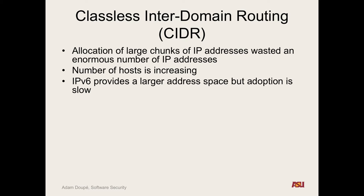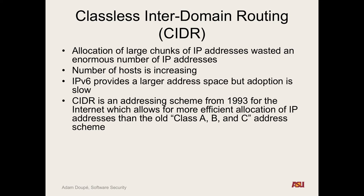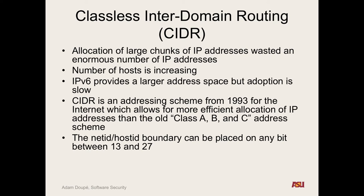IPv6 has 128-bit addresses — enough to address every particle of sand on a beach. The problem is adoption is slow; Google reports about 9-10% IPv6 traffic. In 1993 they came up with CIDR — Classless Inter-Domain Routing — which allows you to change the net ID and host ID boundary to any bit between 13 and 27, so you can arbitrarily adjust the size of the network, giving you 32 to 524,000 hosts.